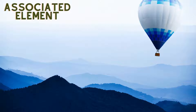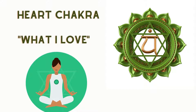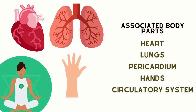As an element, air is associated with knowledge, openness, freedom, expansiveness, freshness, and things that are spirited. The color associated with this chakra is green. On the physical body, this chakra is located near your heart in the center of your chest. The heart chakra rules over the heart, lungs and thymus gland. The endocrine gland associated with this chakra is the thymus gland, and the body parts associated include the heart, lungs, pericardium, hands and the circulatory system.